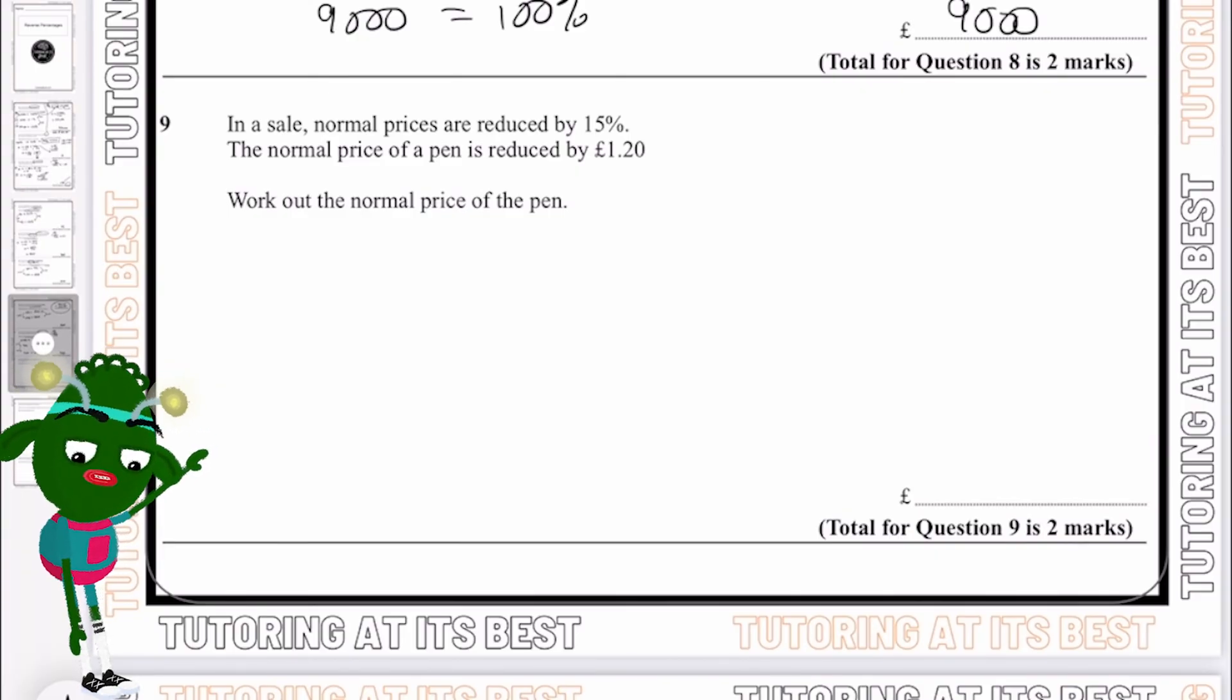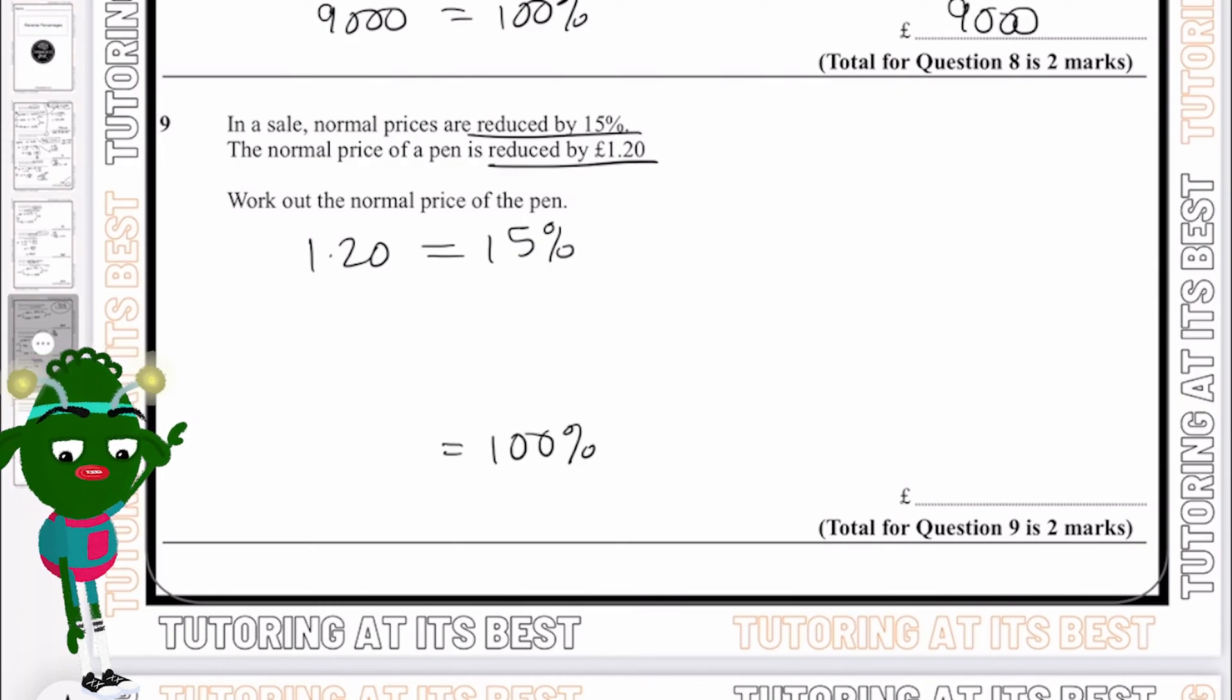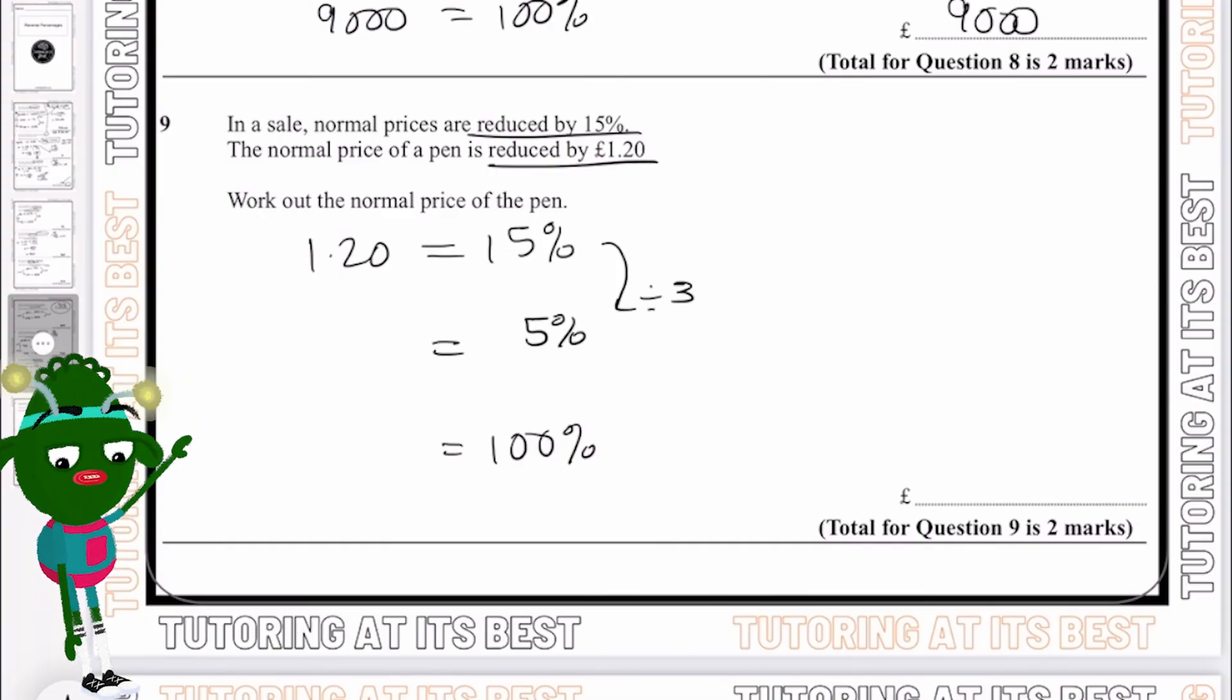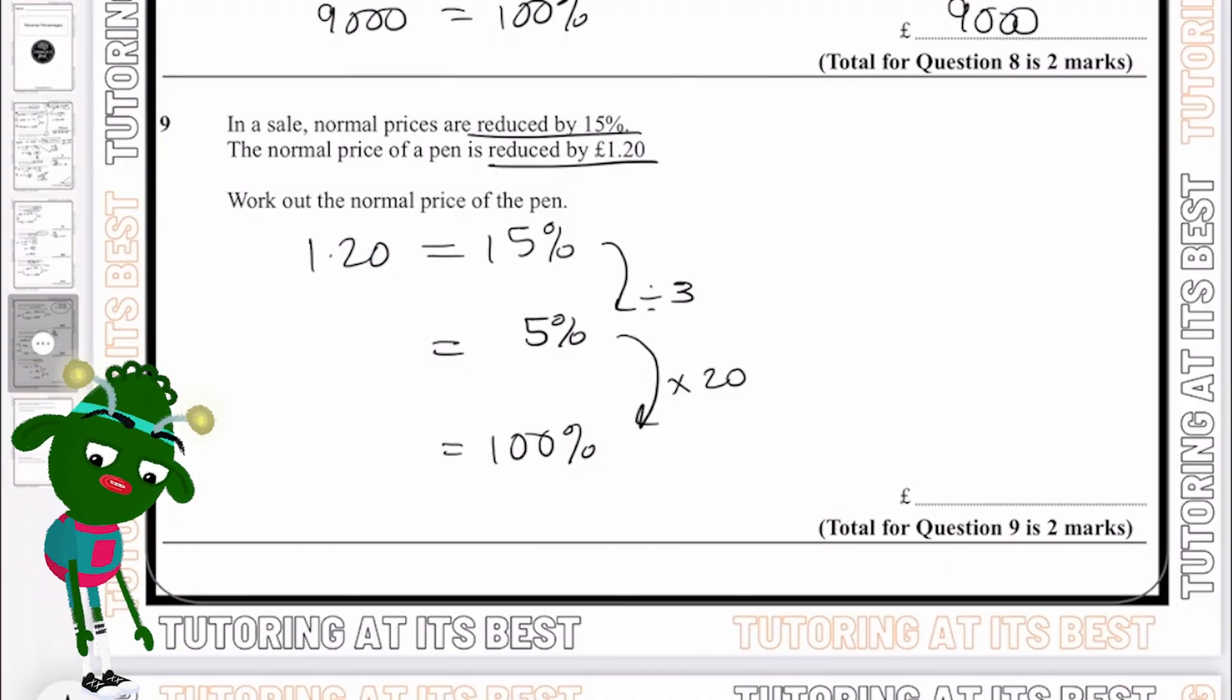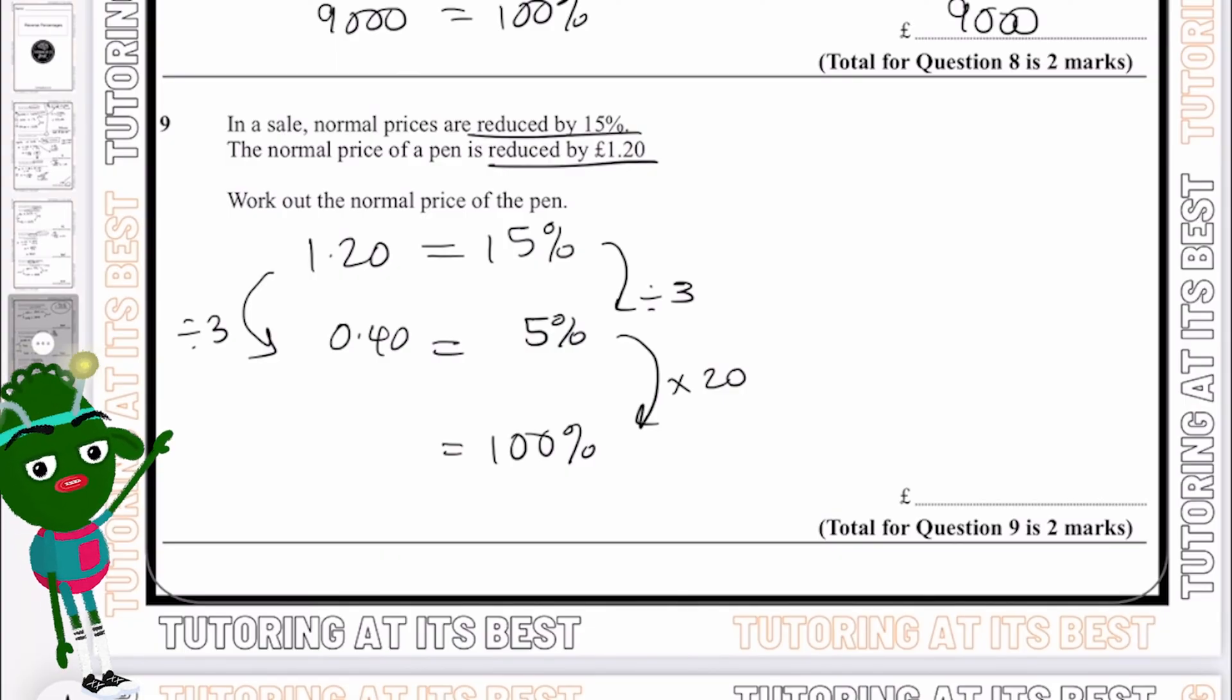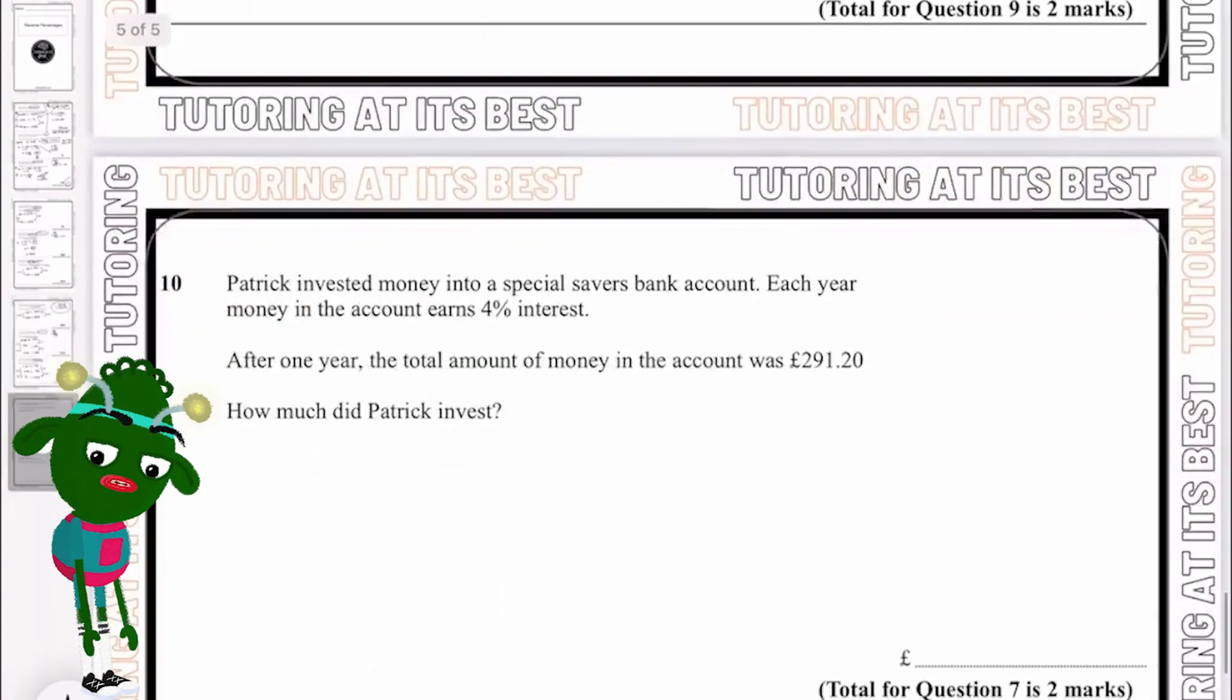Let's go for question number nine. In a sale, normal prices are reduced by 15%, and the normal price of a pen has also reduced by £1.20. So we now know that £1.20 equals 15%, and we need to get this to 100%. So how do we do that? Let's divide this by 3 which gives us 5%, and then times this by 20 which gives us 100%. And we'll do the same thing on the other side here. Divide this by 3 which gives me 40 pence, and then times this by 20 which then gives me £8. So now I know that the normal price of the pen was £8.